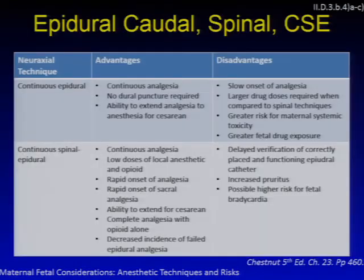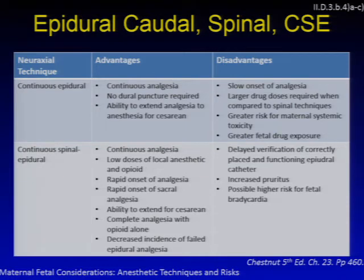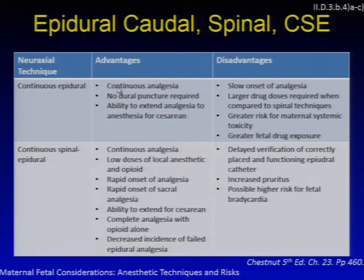Moving on to anesthetic techniques and risks — since this is an advanced lecture, just a few highlights. For continuous epidural, advantages are well-known, but disadvantages include slower onset of analgesia, larger drug dose requirements compared to spinal techniques, greater risk for maternal systemic toxicity, and greater risk for fetal drug exposure. Combined spinal-epidurals (CSEs) offer advantages of lower local anesthetic doses, rapid onset of sacral analgesia, extendability for cesarean, complete analgesia with opioids alone in the spinal component, and decreased incidence of failed epidural analgesia.